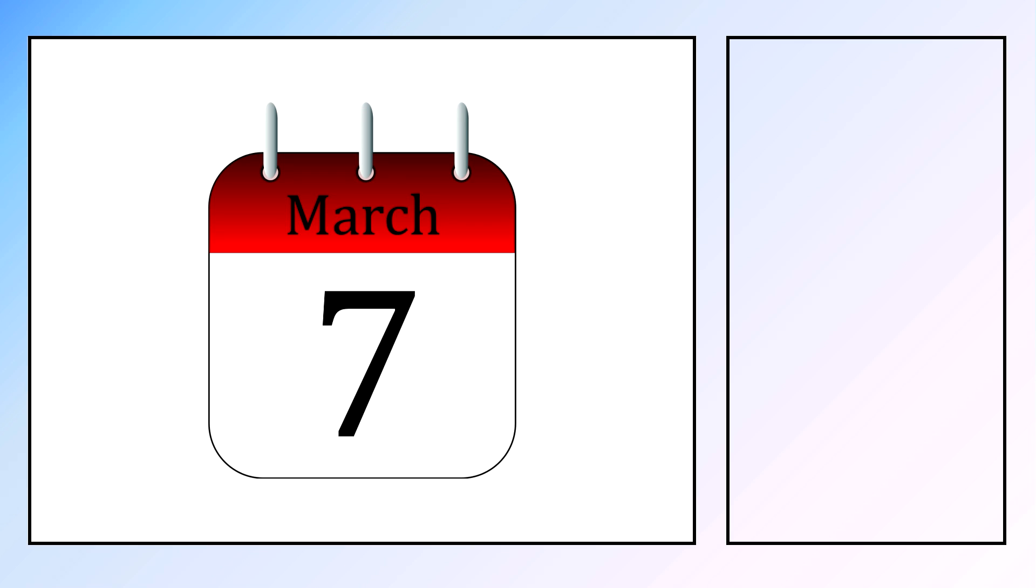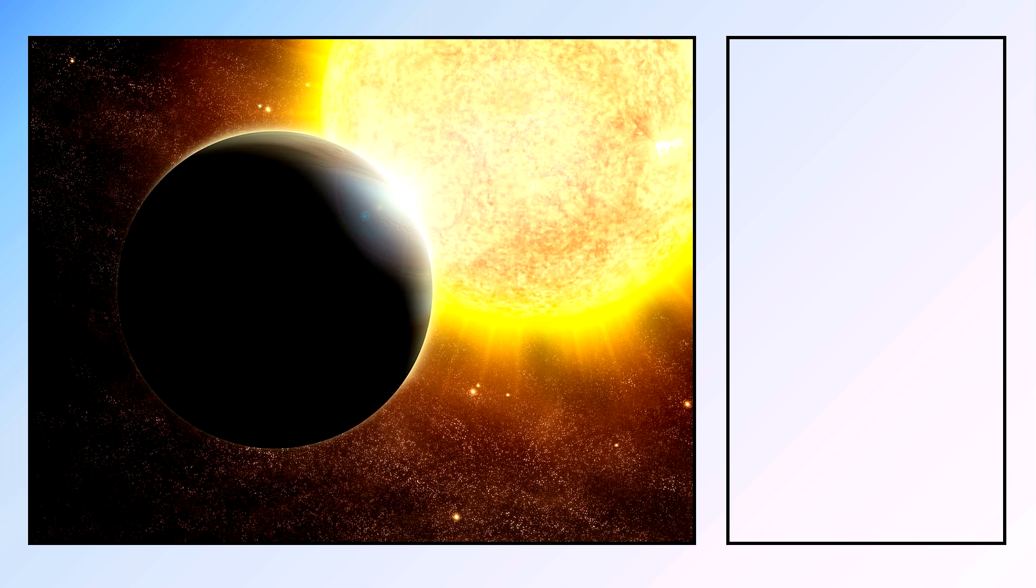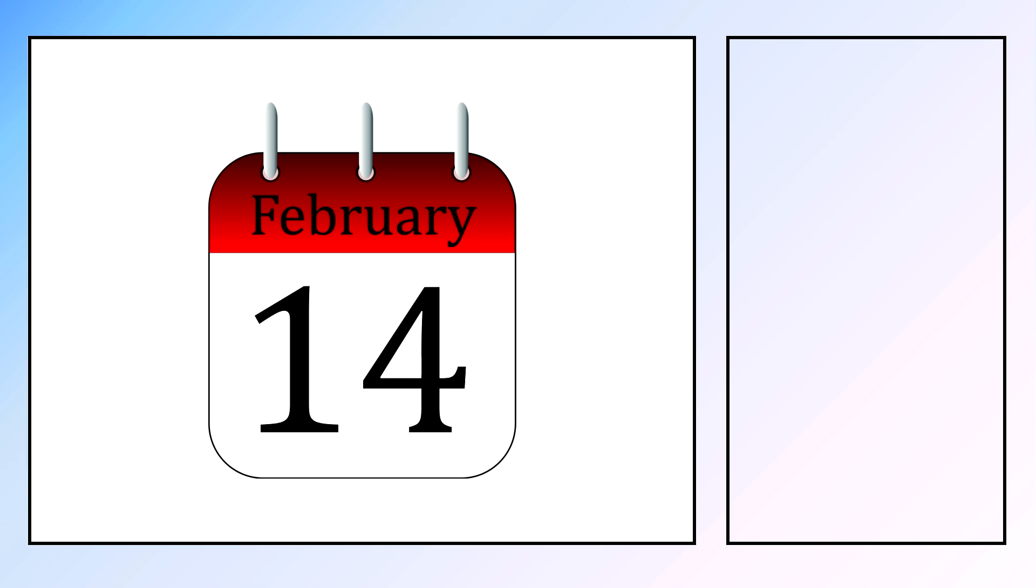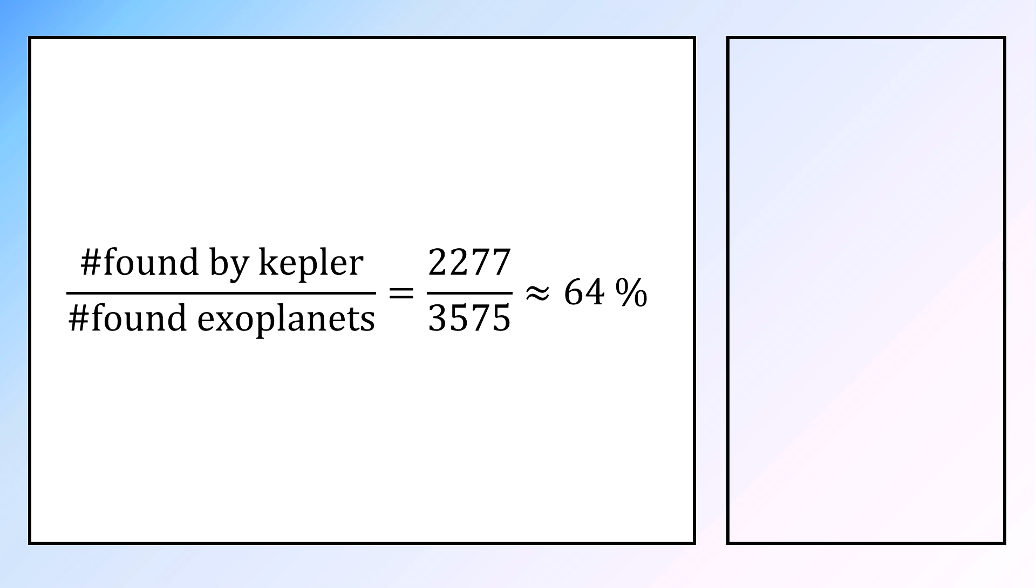On the 7th of March 2009, NASA launched Kepler, mankind's greatest spacecraft when it comes to discovering exoplanets. As of February 2017, 3,575 exoplanets are confirmed, more than 60% discovered by this one single spacecraft.